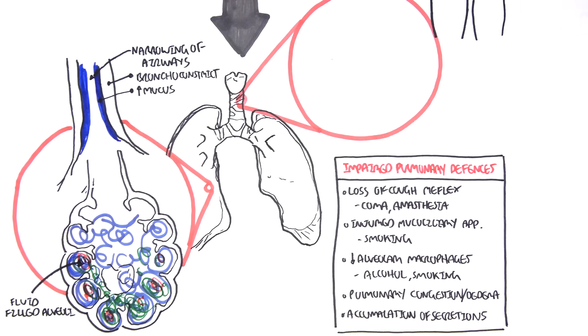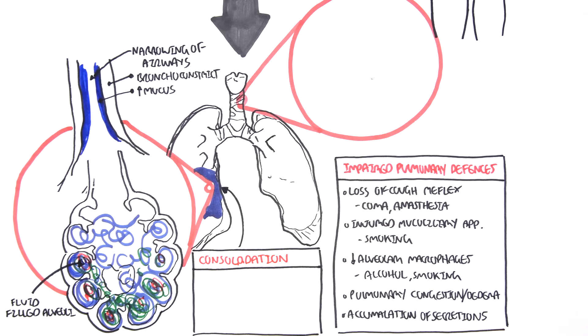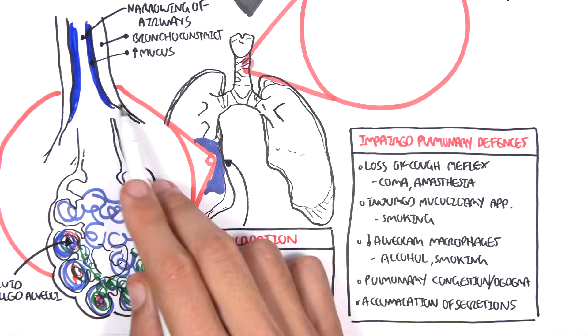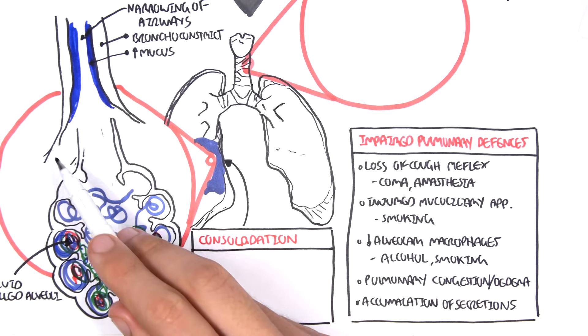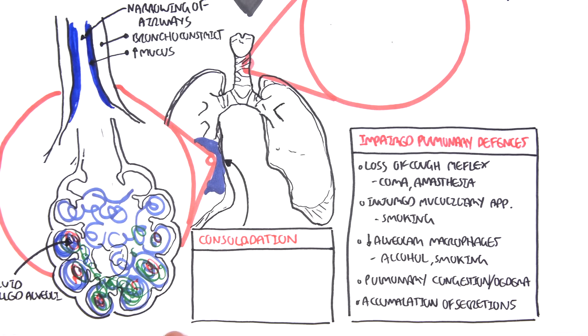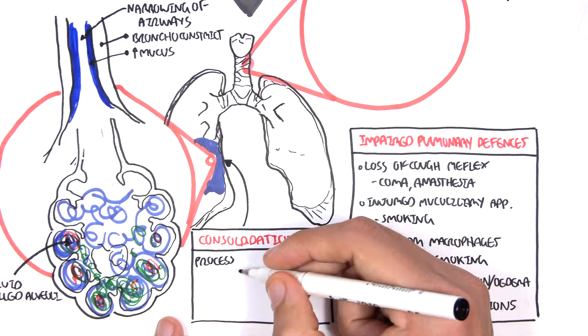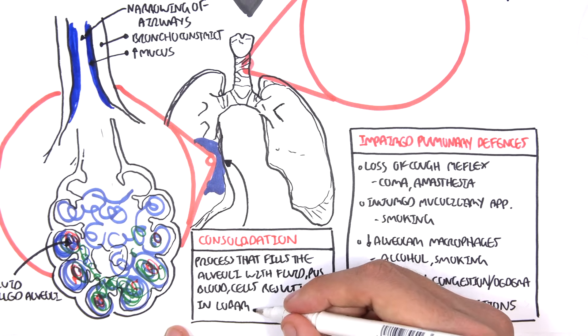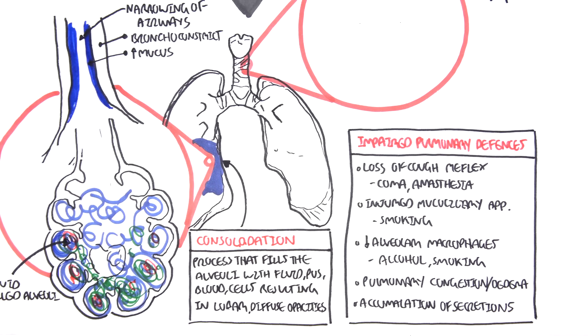The fluid-filled alveoli is known as congestion. In radiological terms, in radiography it's called consolidation and usually occupies a lobe of a lung. It occupies a lobe because what happens is that the fluid-filled alveoli spreads back. It back flows, causing fluid to flow to other alveoli and so on until the consolidation, the congestion occupies the whole lobe. If we were to define consolidation, it is the process that fills essentially alveoli with fluid, pus, blood cells resulting in lobar, diffuse opacity. So again, consolidation is a radiological term. It's basically congestion.